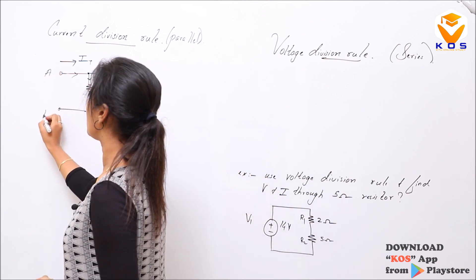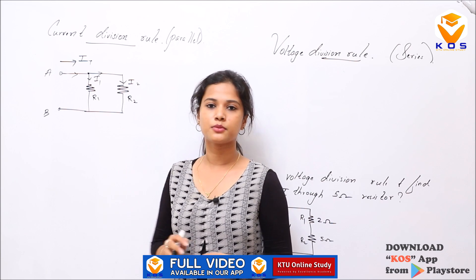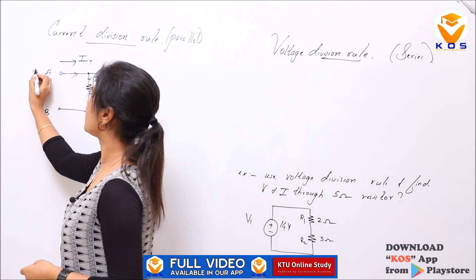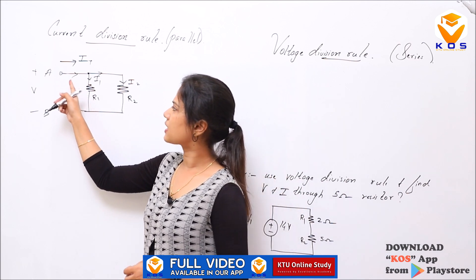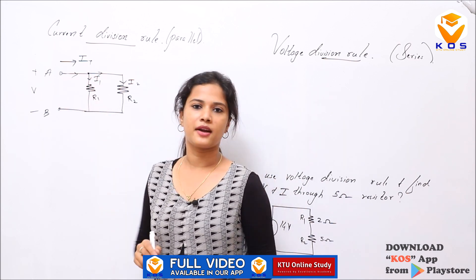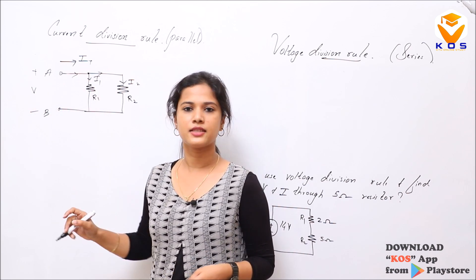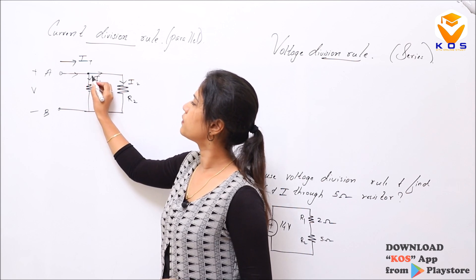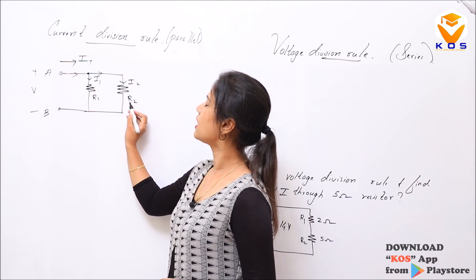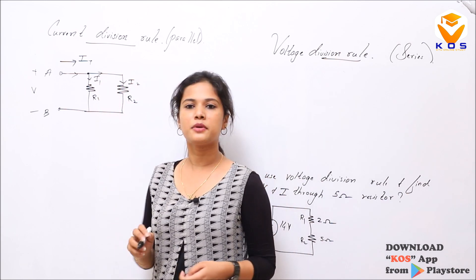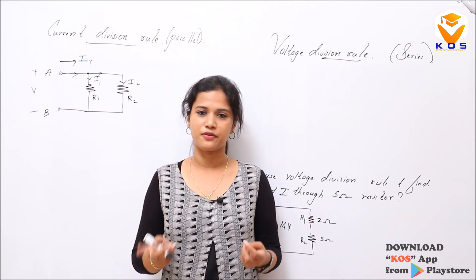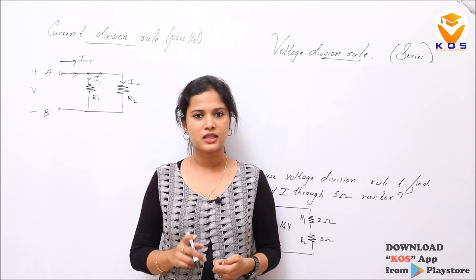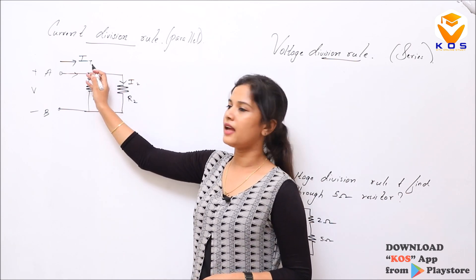We have terminals A and B with resistors R1 and R2. A voltage plus or minus V is applied. The total current flowing through the circuit splits between R1 and R2. The voltage across each resistor remains the same, but the current through each branch will be different.